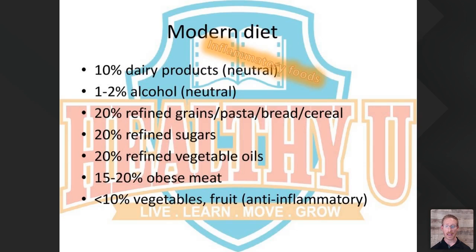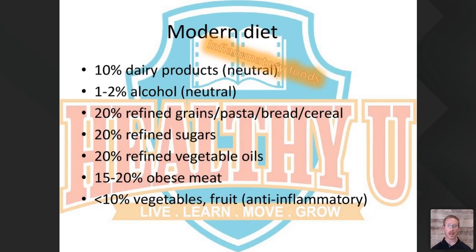Refined grains are also very high in an inflammatory fat called omega-6 fatty acids. We hear a lot about omega-3s, but omega-6s trigger inflammation in every single cell they touch. Our body needs a balance of omega-6 to omega-3 at about 4-to-1 to maintain an inflammatory balance. But with a high-grain diet, we get way out of balance — the average American is closer to 60 omega-6s for every one omega-3. This massive disparity means most Americans are living chronically inflamed just from the omega-6 imbalance.